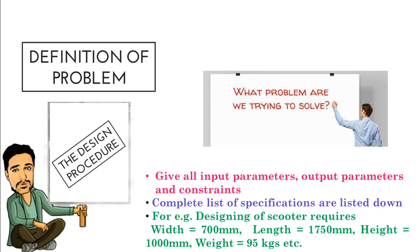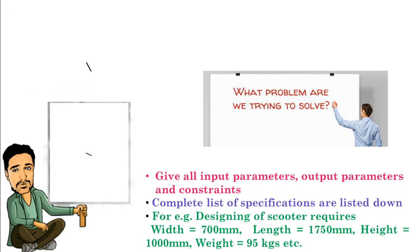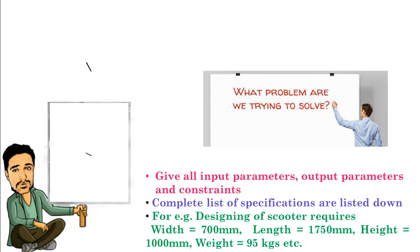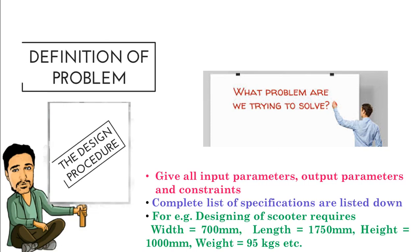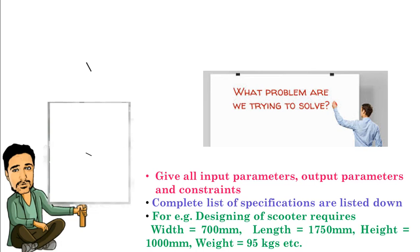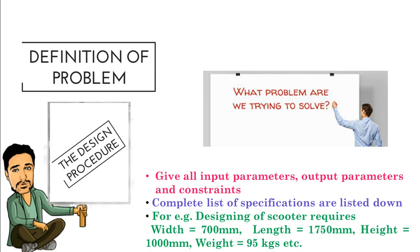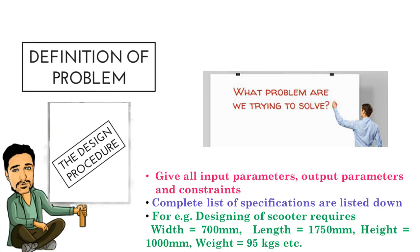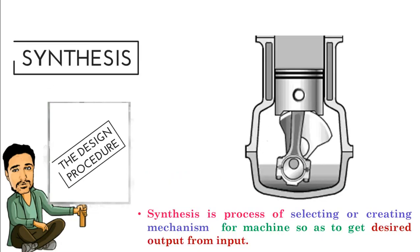The first step in the design procedure is definition of problem. What problems are we trying to solve? Give all input parameters, output parameters, and constraints. In this step, complete the list of specifications. For example, if you are designing a scooter, you'll require the width, length, height, and weight to be specified in this step itself.